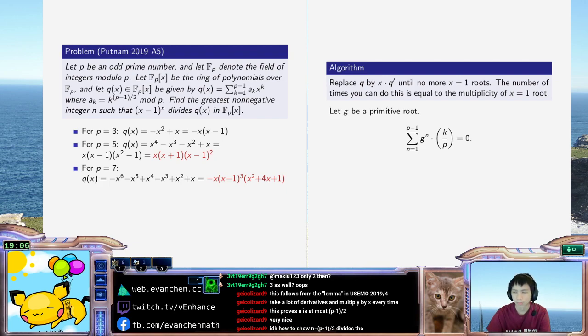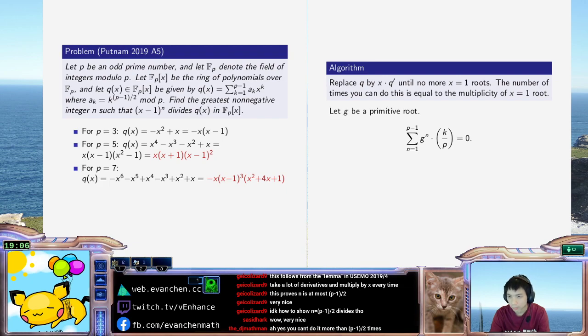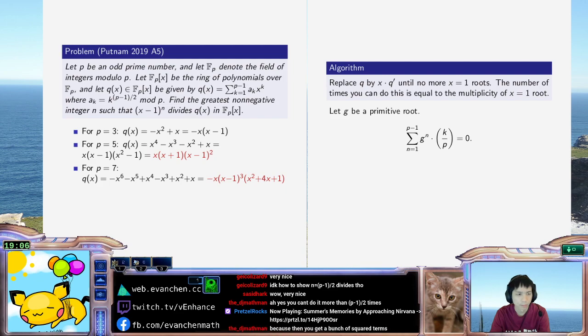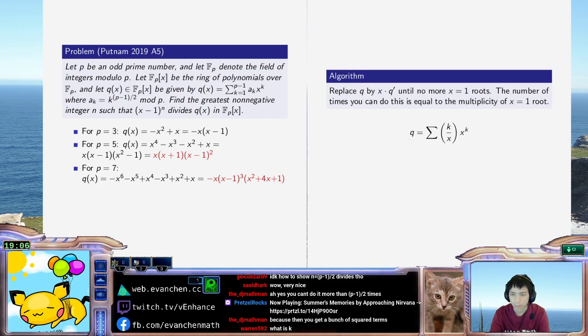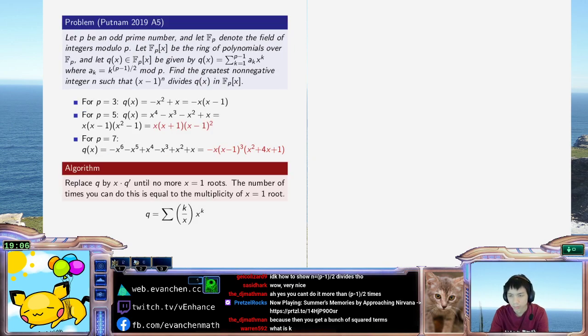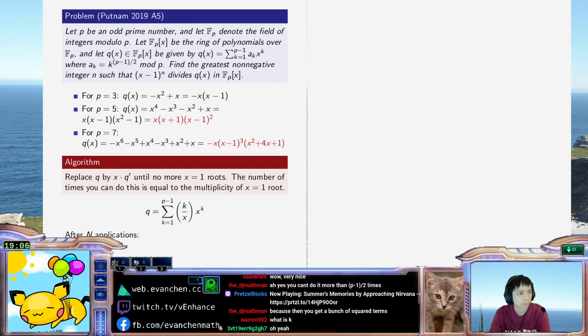I think that'll work. Or... this algorithm, okay. And if I do this algorithm a few times, then it's like I had... Right, so previously it was the Legendre symbol k, x, x to the k. So this is q. And after n applications, what do you get? It's like... it's like again, right?